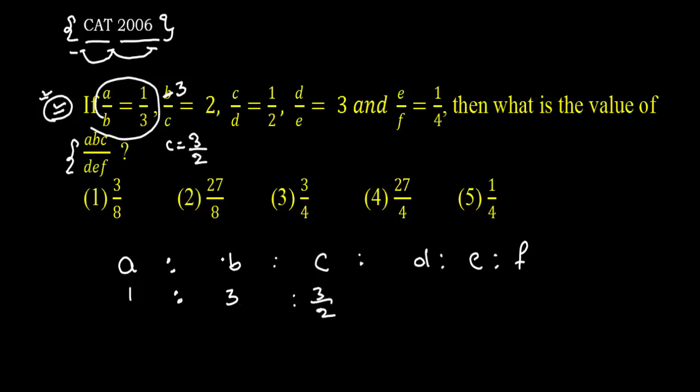I got the value of C from the B. Now I have C as 3 by 2. I put C is equal to 3 by 2 in the third ratio. 2, 2 cancel out. D becomes 3.